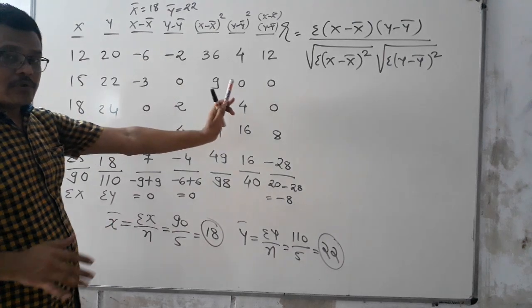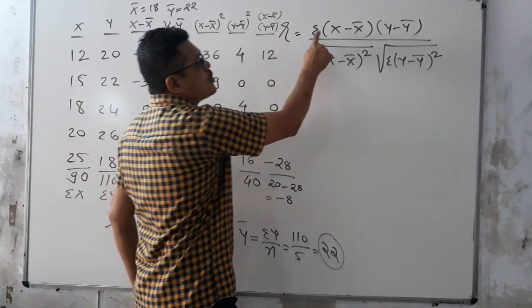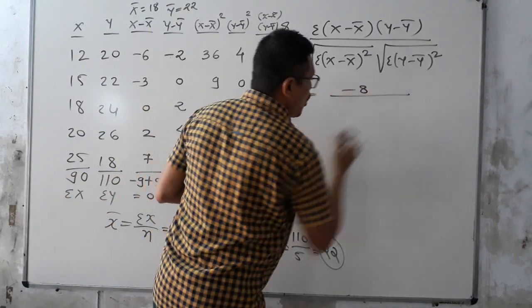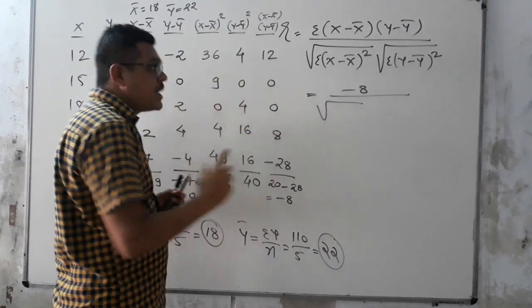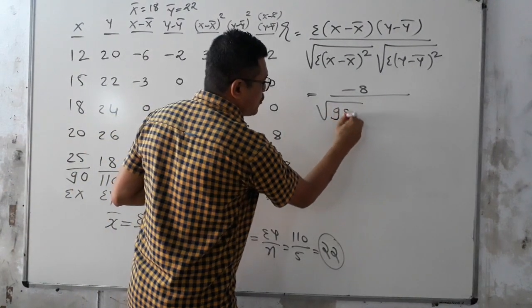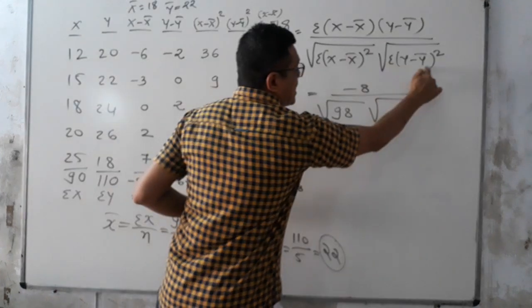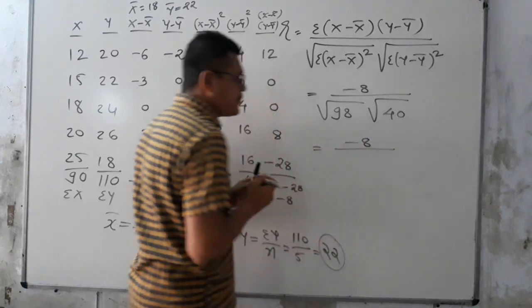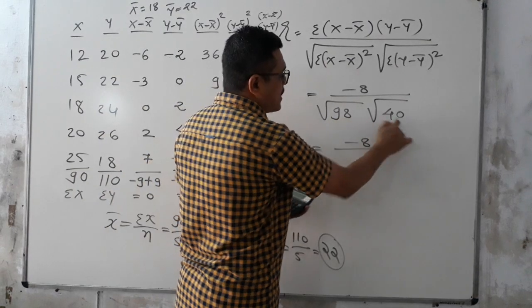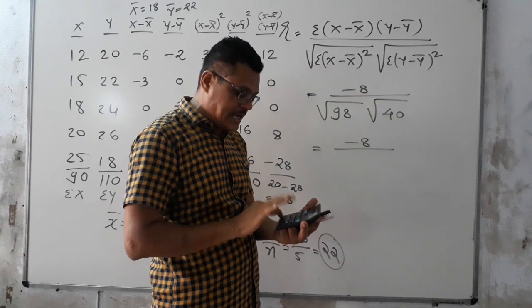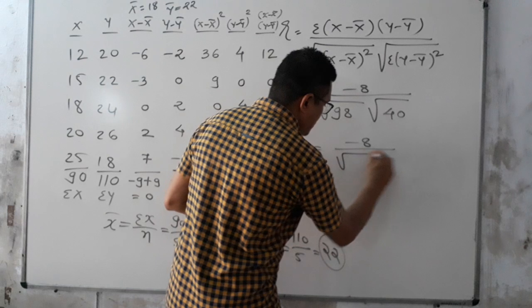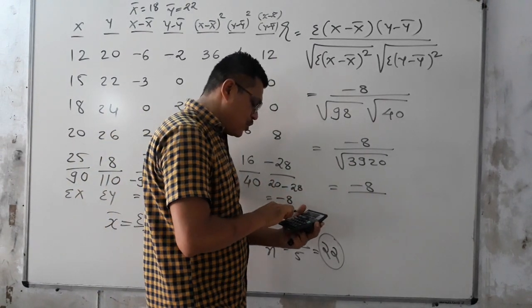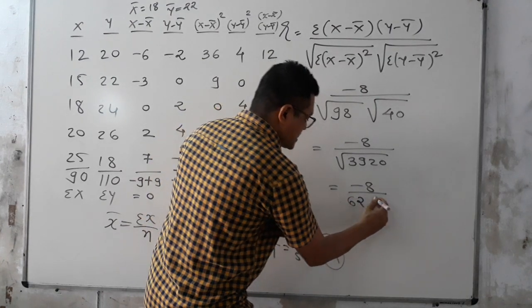Now, after the five columns, we write the formula. R = Σ(X − X̄)(Y − Ȳ) = −8, under root Σ(X − X̄)² = 98, and under root Σ(Y − Ȳ)² = 40. So R = −8 upon under root of 98 × 40 = −8 upon under root of 3920. The under root of 3920 is 62.609, so we write 62.61 (since the third digit is more than 5, we round up).